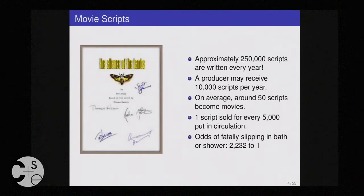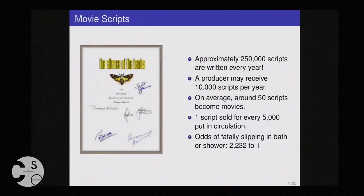Approximately 250,000 scripts or screenplays are written every year. A single producer may receive 10,000 scripts per year — a script is almost as big as a book. On average, out of these 250,000 scripts, only 50 will make it into movies. The odds of fatally slipping in a bath are higher than actually making your script into a movie.